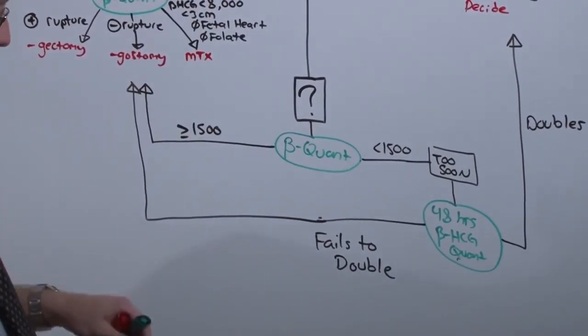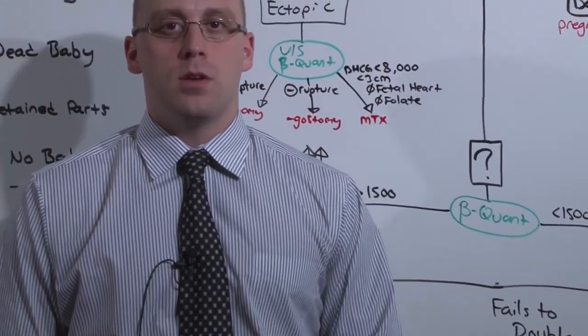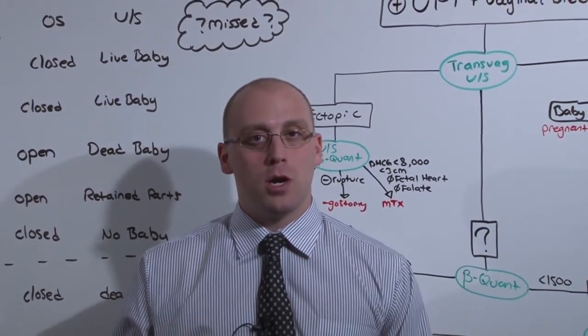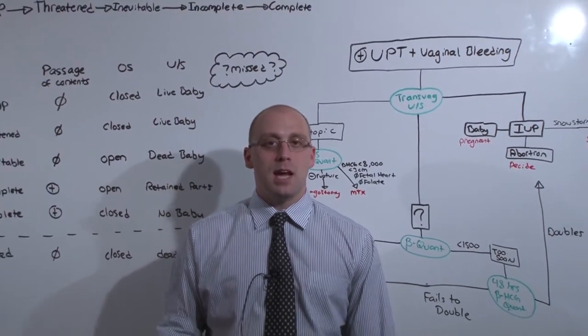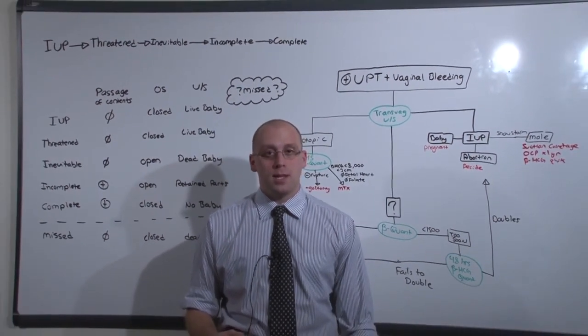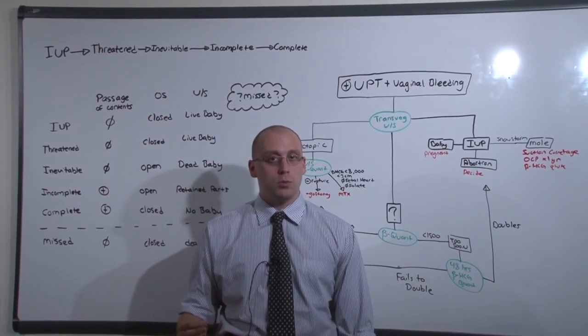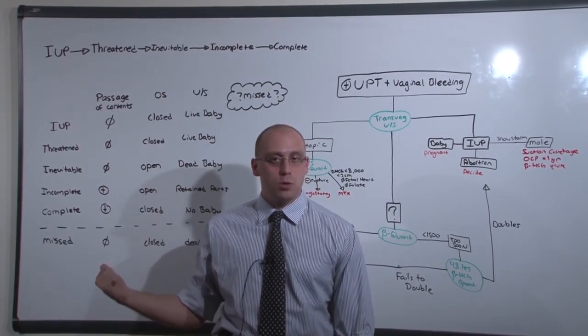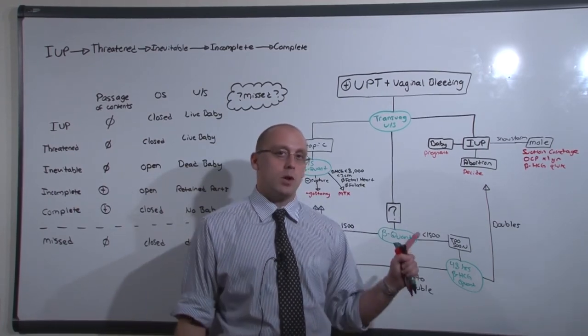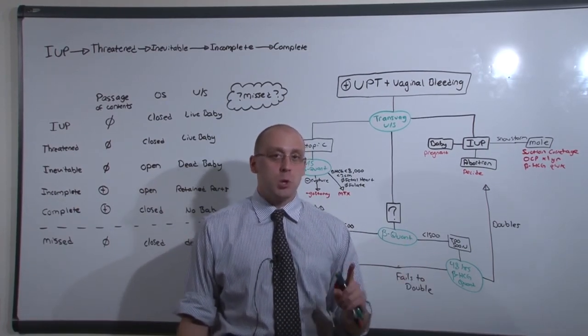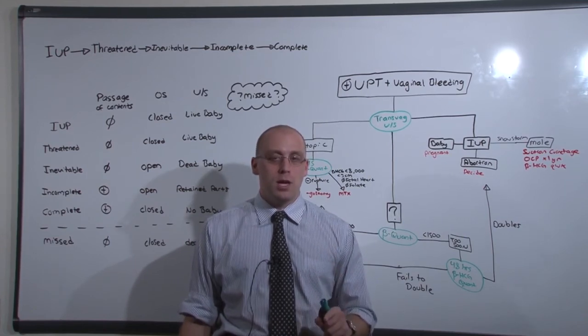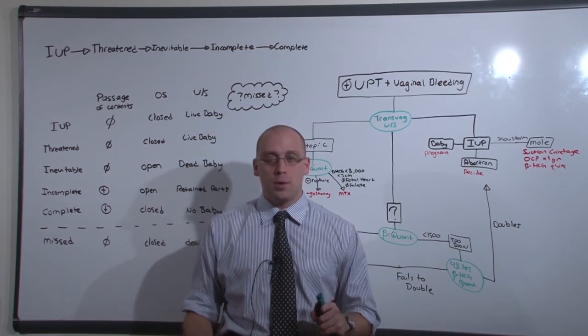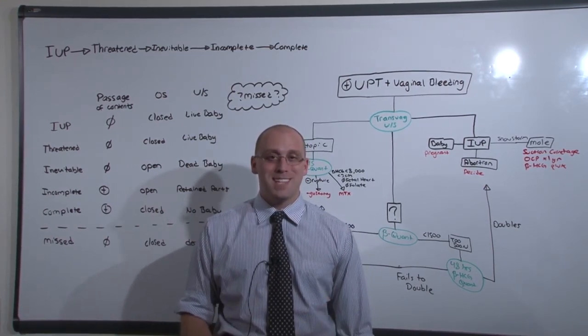So in this lecture, what we discussed was what to do when there is a woman who is early on in her pregnancy, positive UPT, and has vaginal bleeding. Recognizing that vaginal bleeding during early pregnancy is okay, but you have to know how to diagnose an abortion and what to do about each kind, and what to do about an ectopic pregnancy. Especially when you are very early on and the transvaginal ultrasound is not reliable to tell you intrauterine pregnancy versus ectopic. That is, when the beta quant is less than 1500.